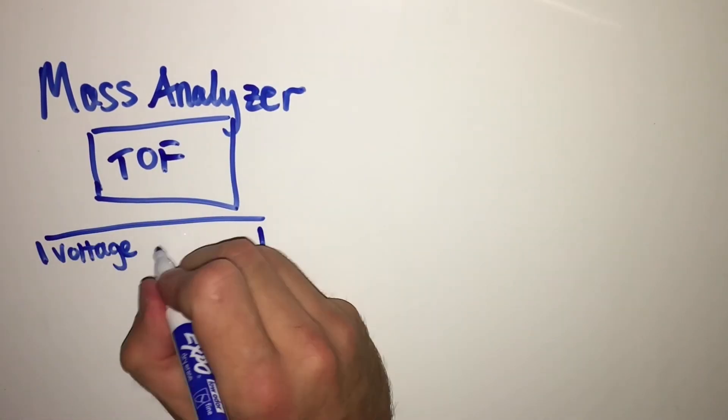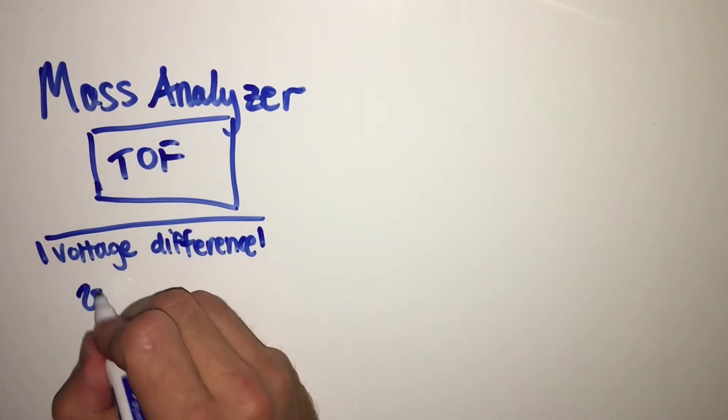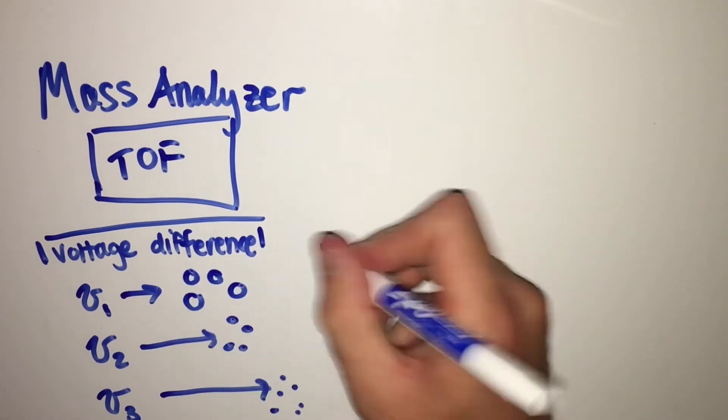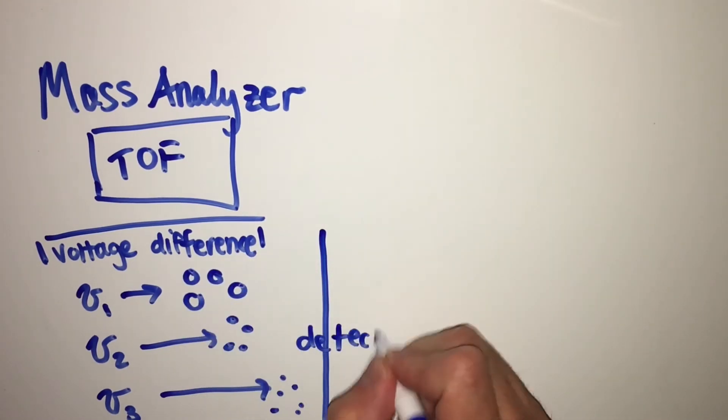Next, the ions will be analyzed for their mass-to-charge ratio. This can be done with a time-of-flight analyzer, often abbreviated as TOF. When accelerated through a voltage difference, ions of different masses will gain different velocities. A time-of-flight analyzer measures the distribution of velocities, as smaller ions will gain a greater velocity and will hit a detector more quickly than larger ions.